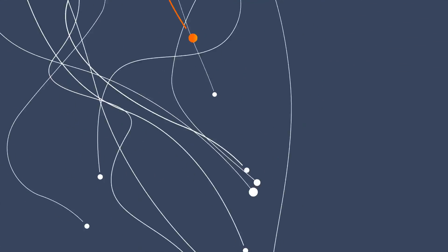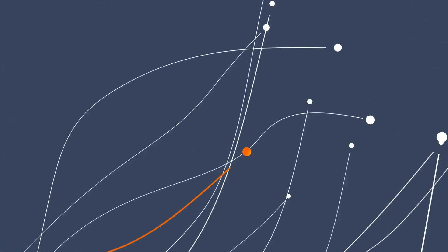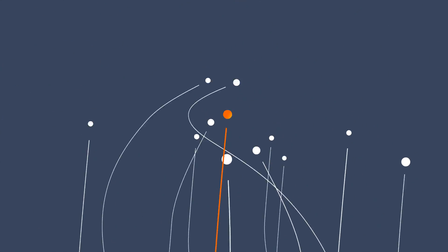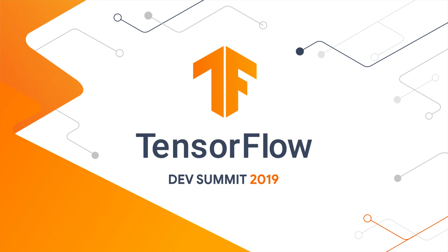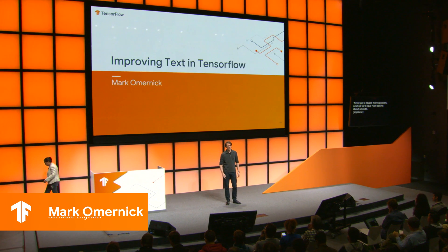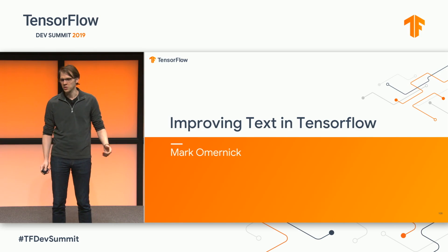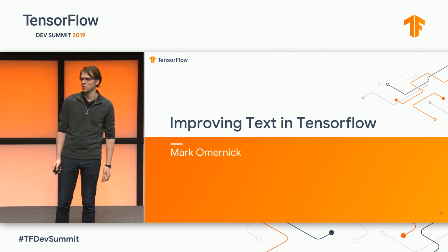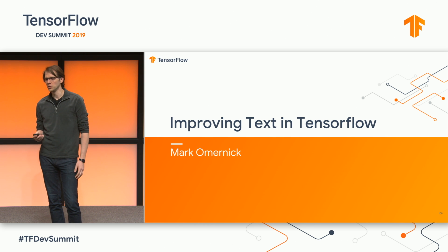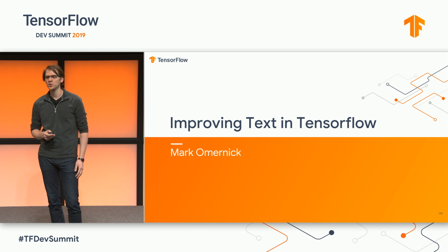Good morning. My name is Mark Omernik, and I'm a software engineer with Google AI. Today, I'll be talking about two projects. The first is enhanced Unicode support across the TensorFlow code base, and the second is a new tensor type called RaggedTensors, intended to officially represent sequence data.